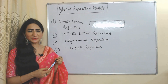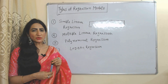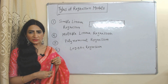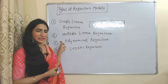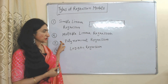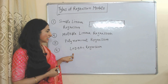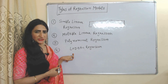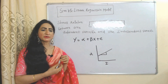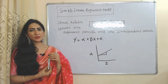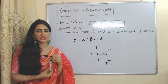Now we are going to talk about types of regression models. Regression models are mainly divided into four types: simple linear regression model, multiple linear regression model, polynomial regression model, and logistic regression model. We will discuss each one by one.